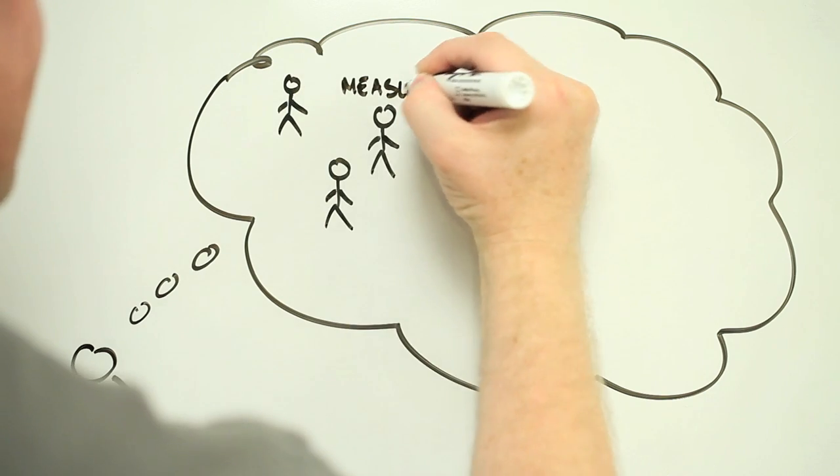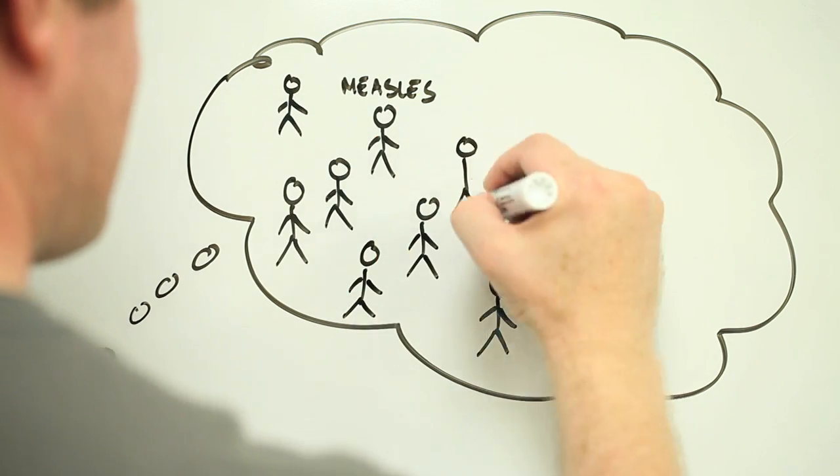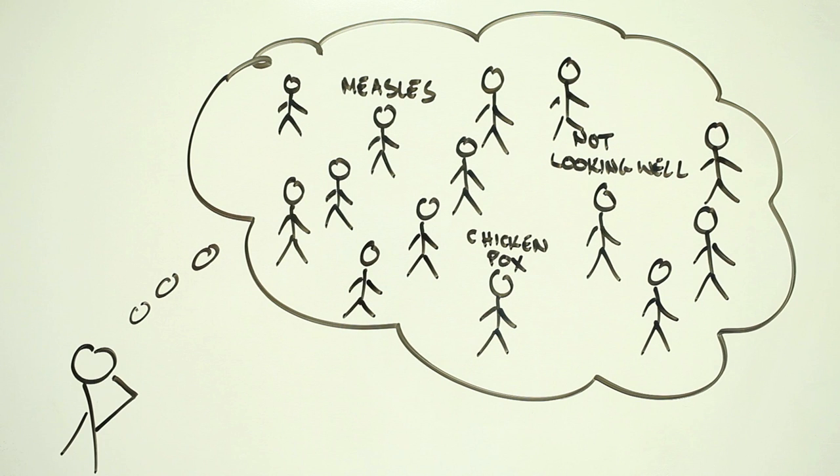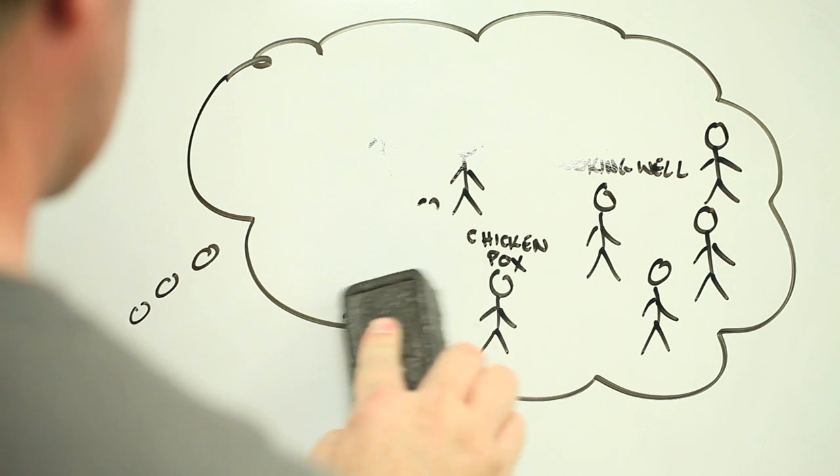It turns out that when we try to figure out how rare or common a disease is, we try to think of people we know or people we have heard of who have the disease. If we can easily think of people who got a disease, it seems common.